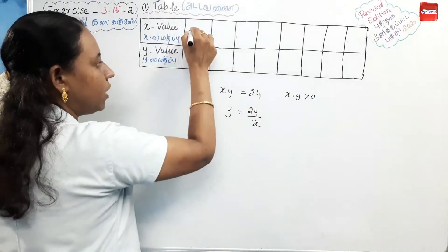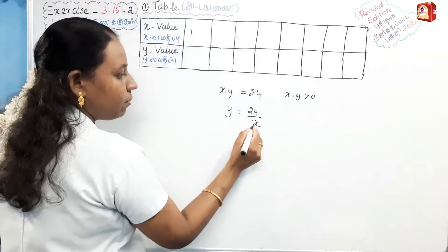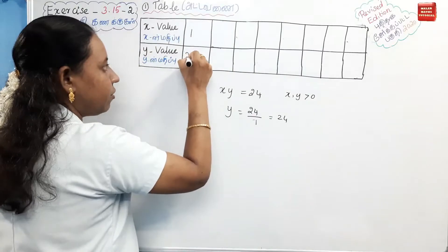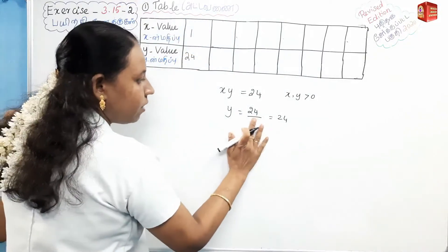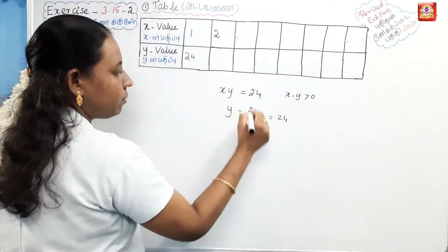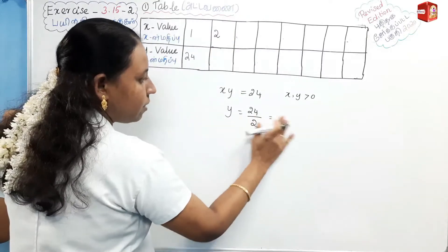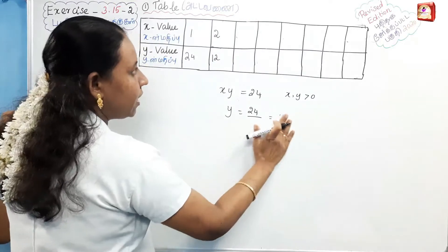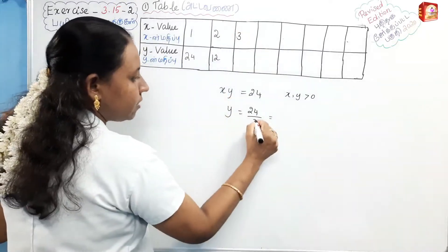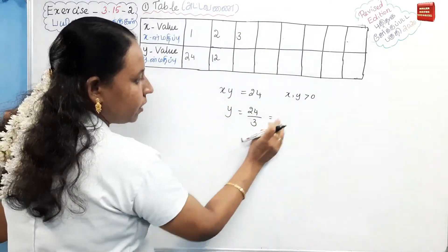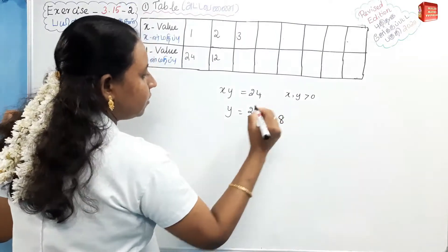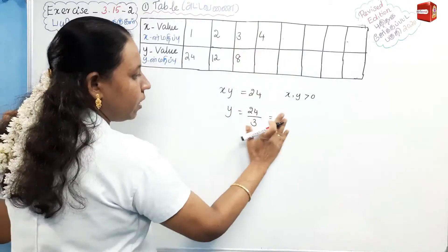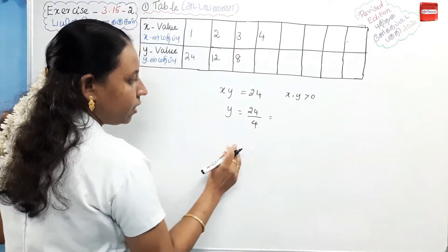We write the value of x starting from 1, and the answer is 24. Next we take x equal to 2, and 24 divided by 2 gives 12. Then x equals 3, and we substitute into the equation to get the corresponding y values.